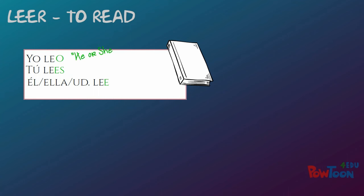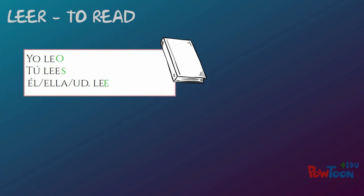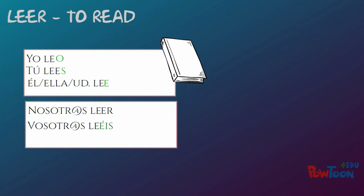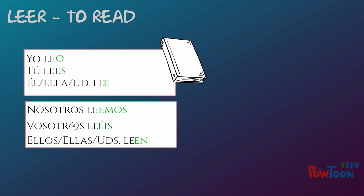Remember the rhyme: for he or she, use an A or an E. This gives us he, she, it, or you formal reads. Nosotros leemos — drop the ER and add EMOS for we read. And the last one: ellos, ellas, ustedes leen — drop the ER and add EN for they or you all read.